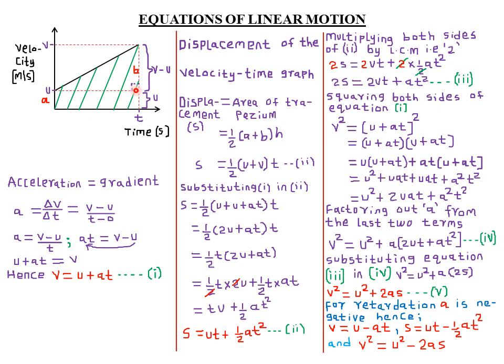The height is movement along the time axis, represented by the dotted line perpendicular to the two parallel sides. The body starts from rest at time zero and moves up to maximum time t, so t minus zero gives height = t. Therefore, s = one-half into (u + v) multiplied by t. We name this as equation two.